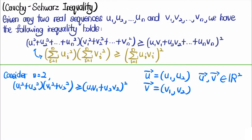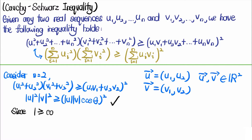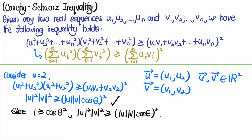Looking closely, the left-hand side is the product of the squared magnitudes of each vector, and the right-hand side is the square of the dot product. This is immediately true since 1 ≥ cos²θ, so |u|²|v|² ≥ (u · v)². This proves the case when n = 2.